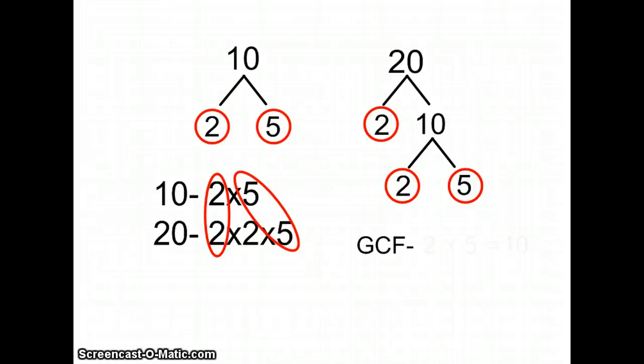These numbers that you have circled are what you're going to use to find your greatest common factor. For every pair of numbers that you circle, two and two, you would use that number one time.